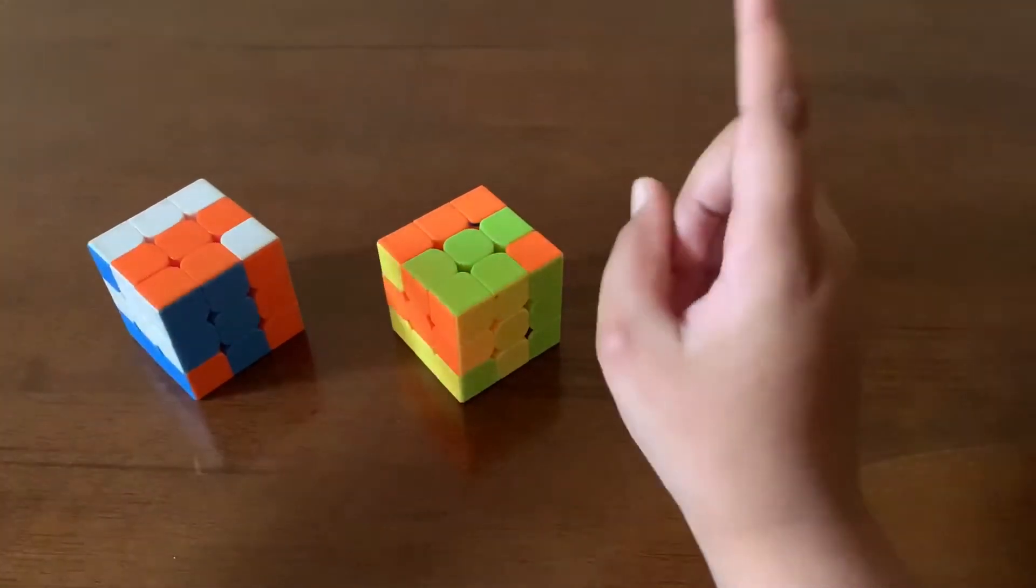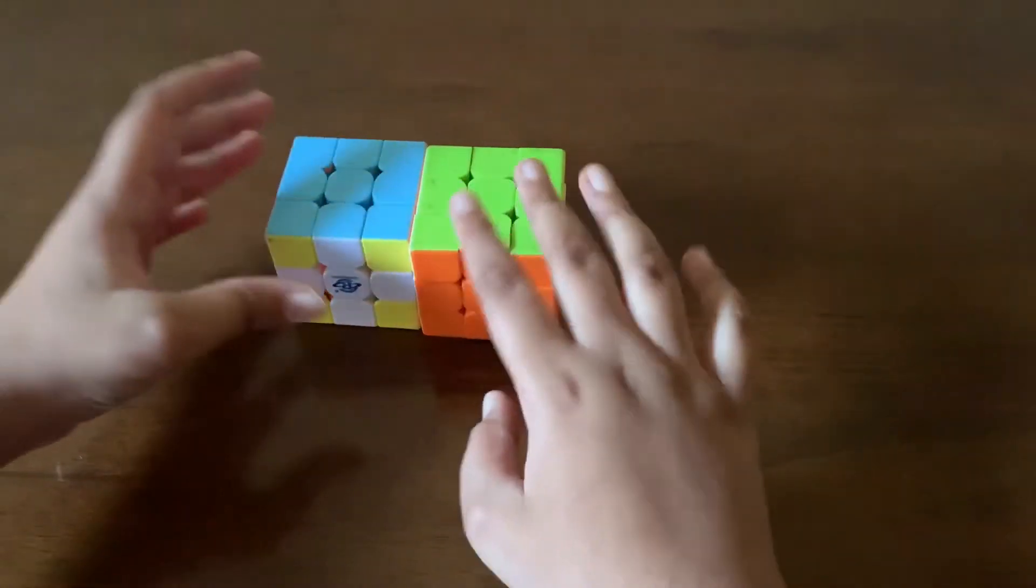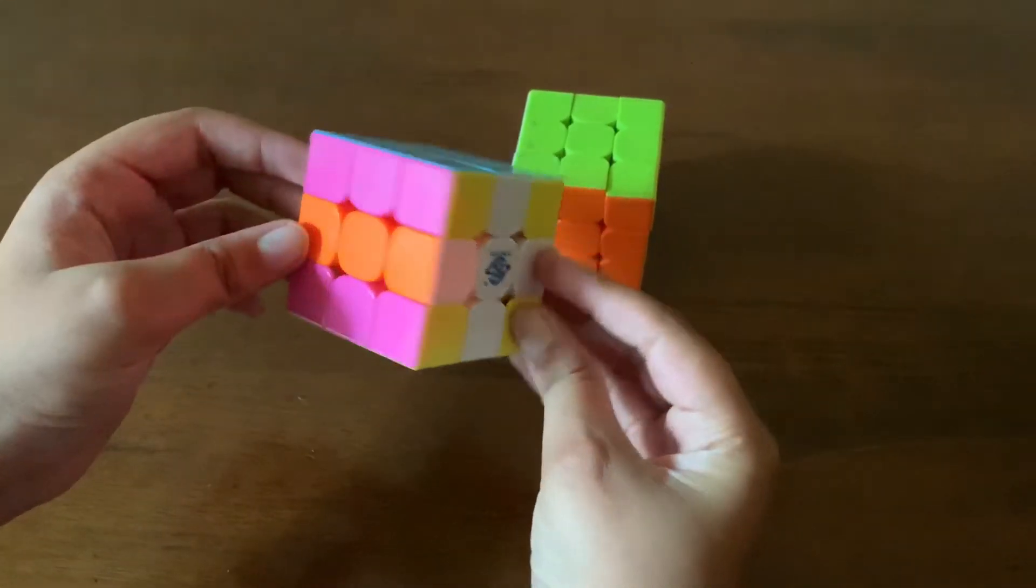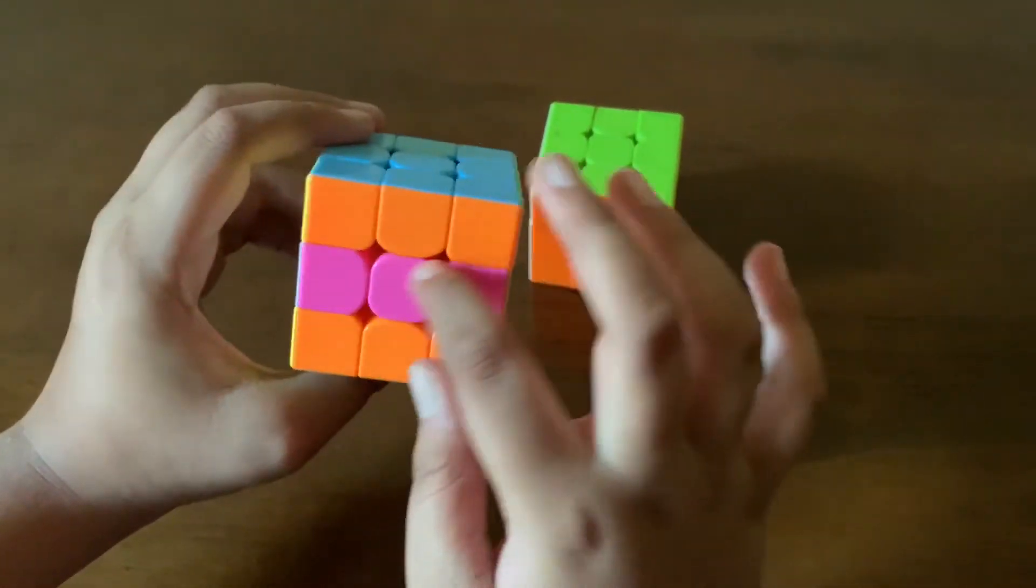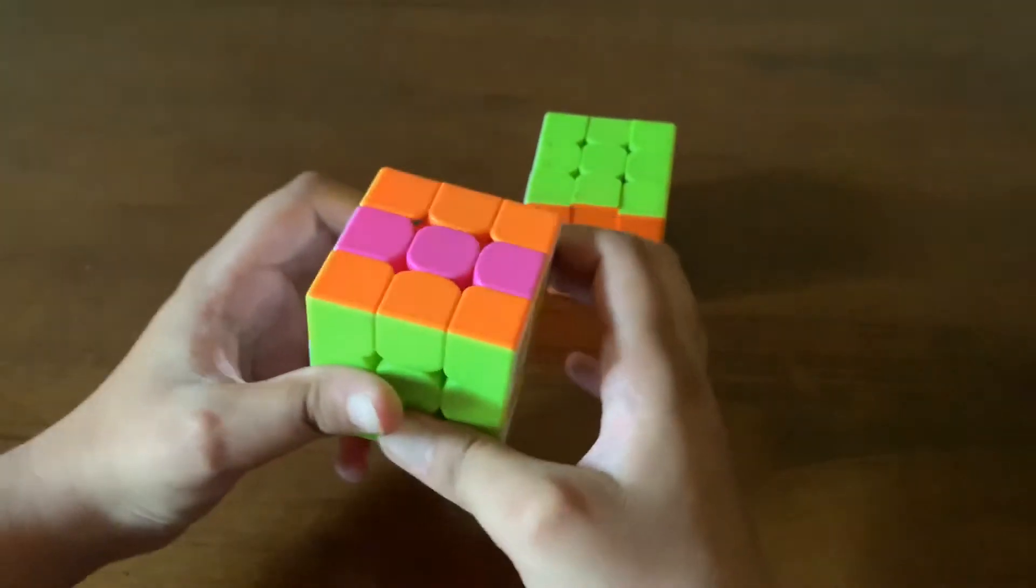So the next pattern is going to be the plus minus pattern. So the plus pattern looks something like this. So the plus, then minus. Plus, then minus. And these two sides, nothing has happened to them.